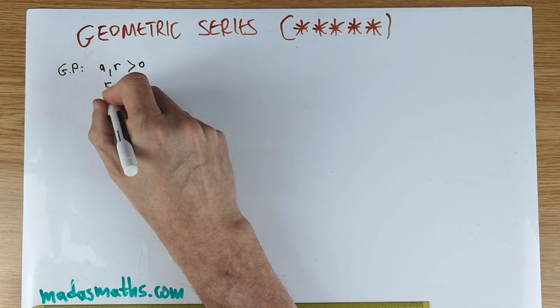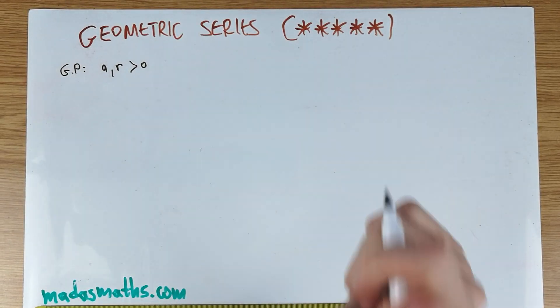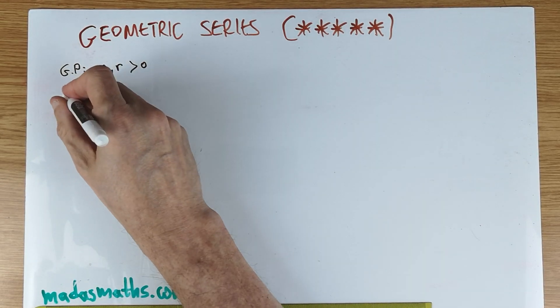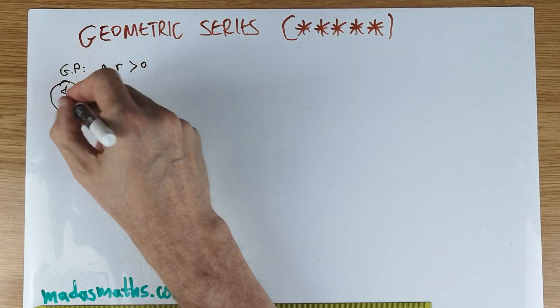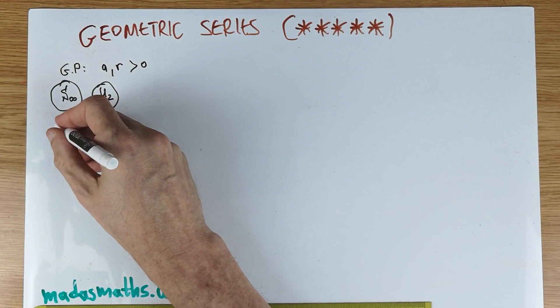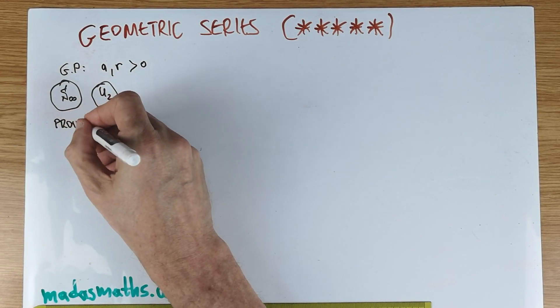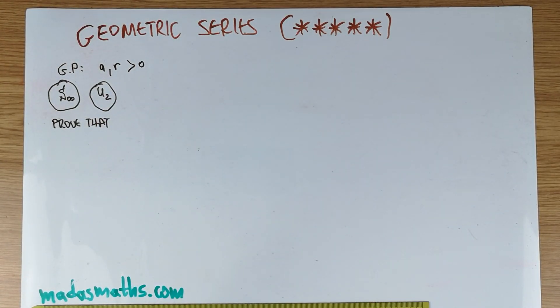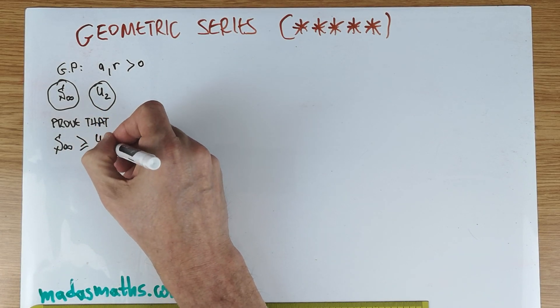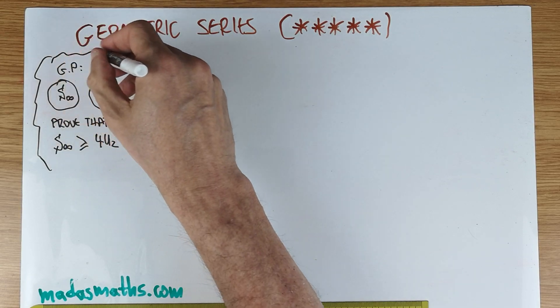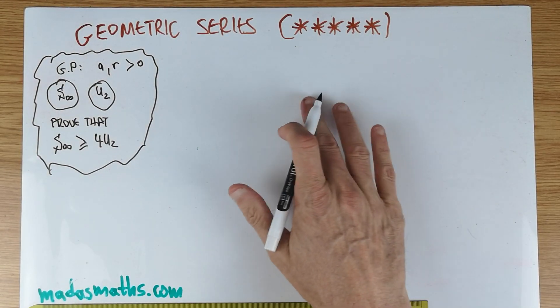So this is what is given. And we have the sum to infinity to consider and the second term. So this is now the things we consider: to prove that if a geometric series converges and the first term as well as the common ratio are positive, then we have to prove that the sum to infinity is at least four times the second term. So this is basically the question.